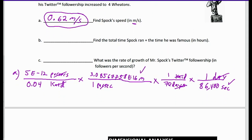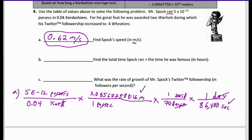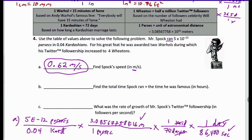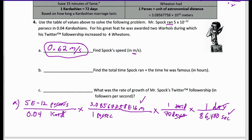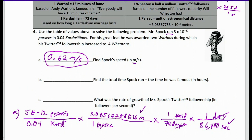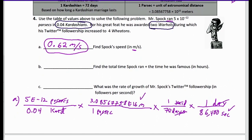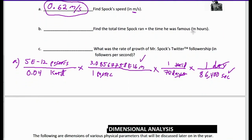Two more to go. It wants the total time that Spock ran and the time he was famous, in hours. I need the units talking about time: when he was running it's given in Kardashians, and his award was two Warhols. So let's go ahead and convert the Kardashians into hours.